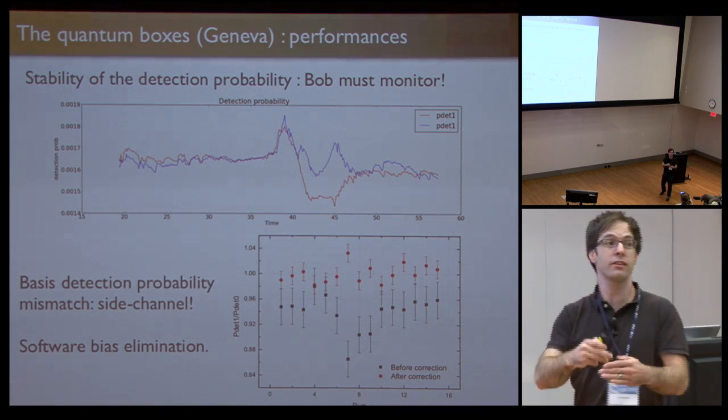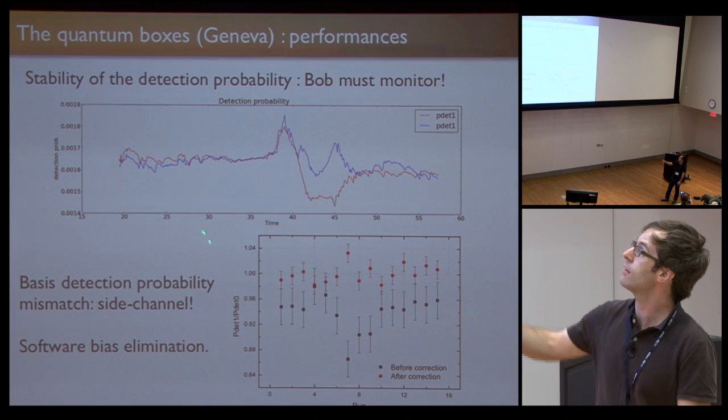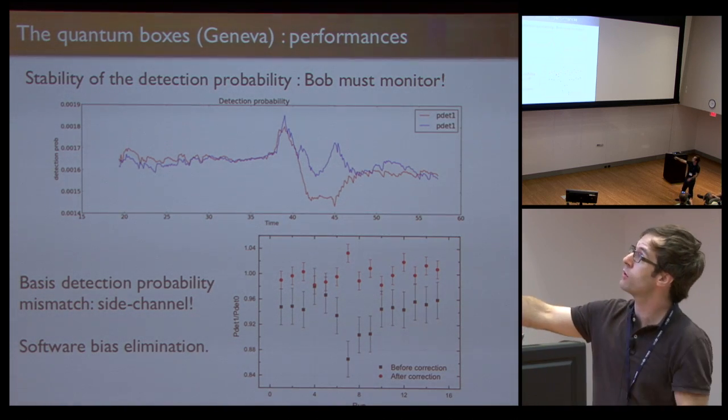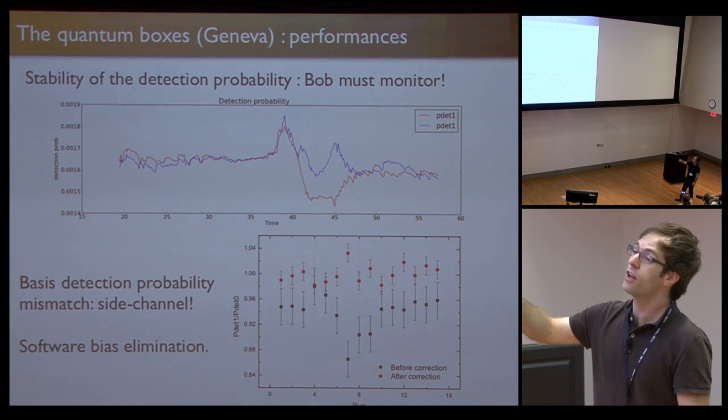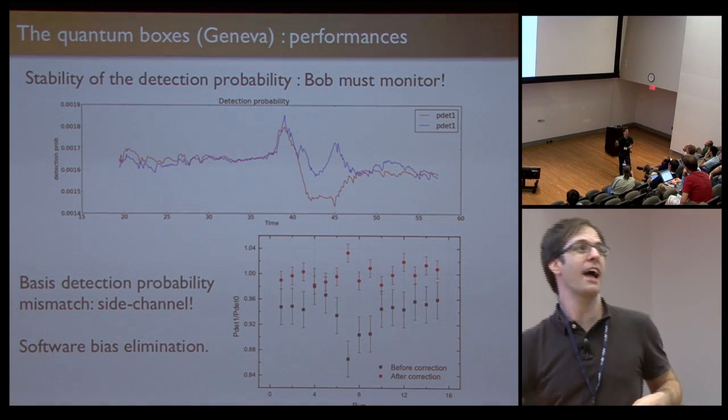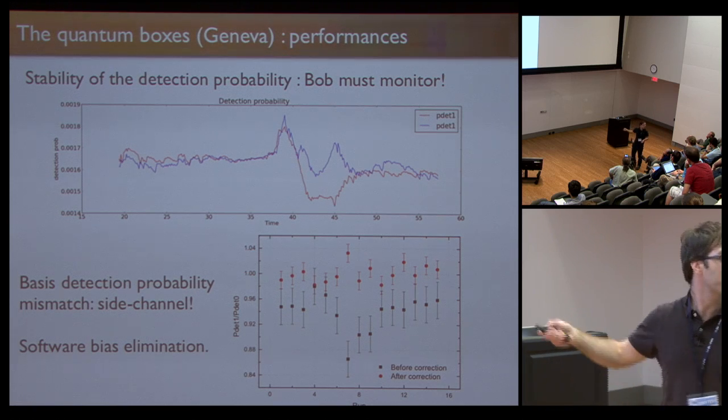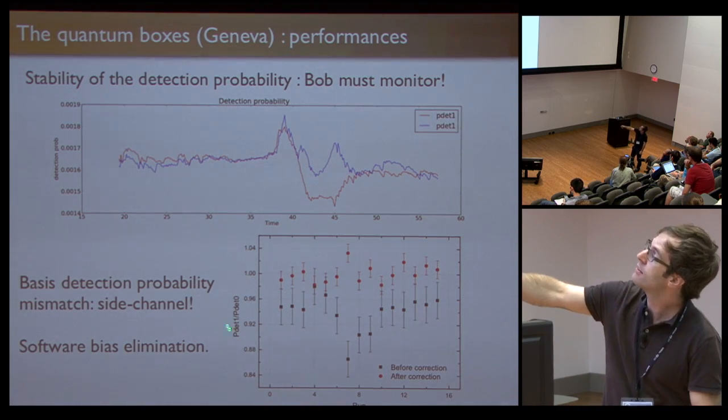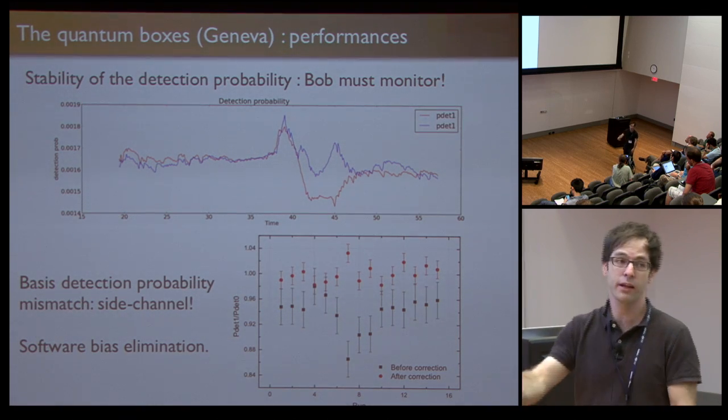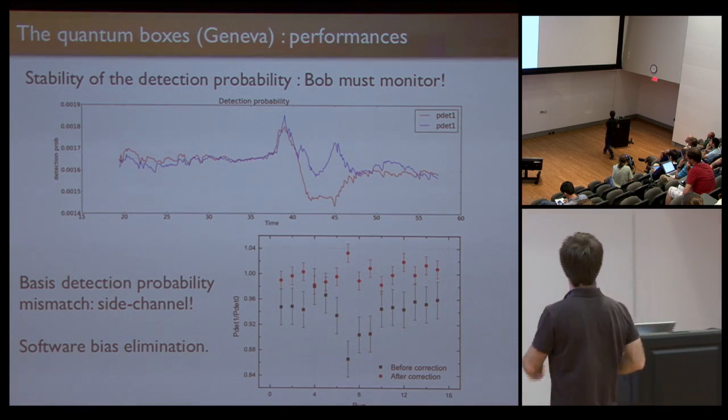You also have to check for the detection probability. This can vary over time because the detectors' efficiency can change if things get misaligned slightly or things like that. The detection probability can fluctuate, so Bob should certainly monitor that every once in a while. There's an easy side channel that could be exploited here because it could be that the detection efficiency in one basis is not the same as the other one. The only thing that Alice would need to do is to send a couple of pulses and see how many of those pulses Bob claims to have detected, and then she knows in which basis he's measuring. We need to compensate for this. The system was suffering from that. This is the ratio of the detection probability of the least efficient basis over the most efficient basis, and it was around 95 percent. This can be corrected by having Bob remove some of the detections at random to equalize these detection efficiencies.